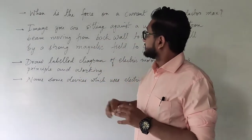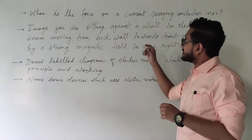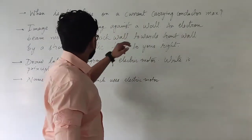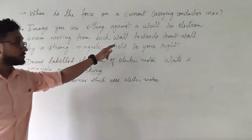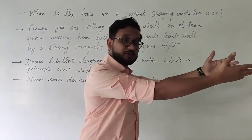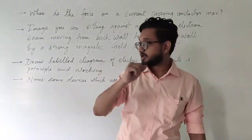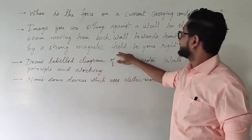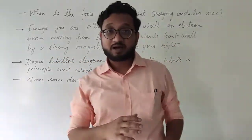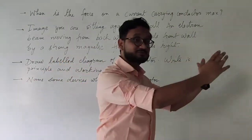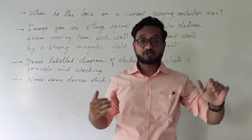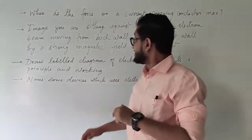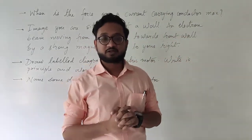This next one is a complicated question. Imagine I am sitting against a wall. An electron beam is moving from the back of the wall to the front wall. The electron is moving this way. It is deflected by a strong magnetic field to your right. The next part of the question asks: in which direction is the magnetic field?